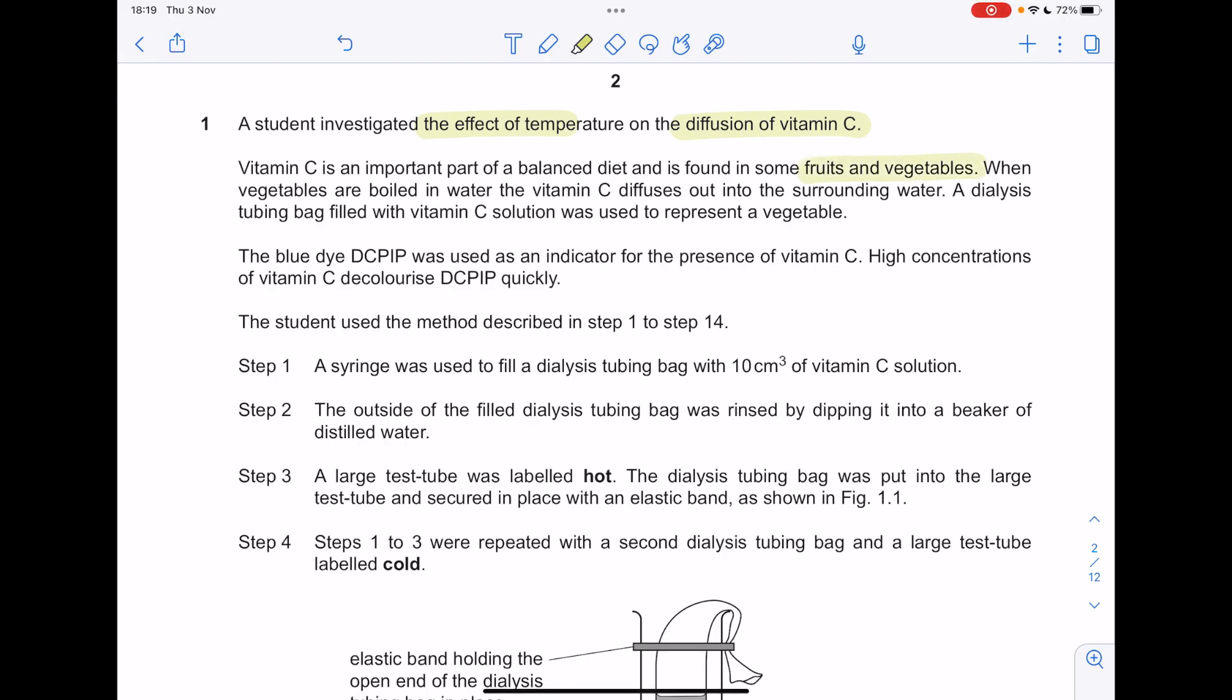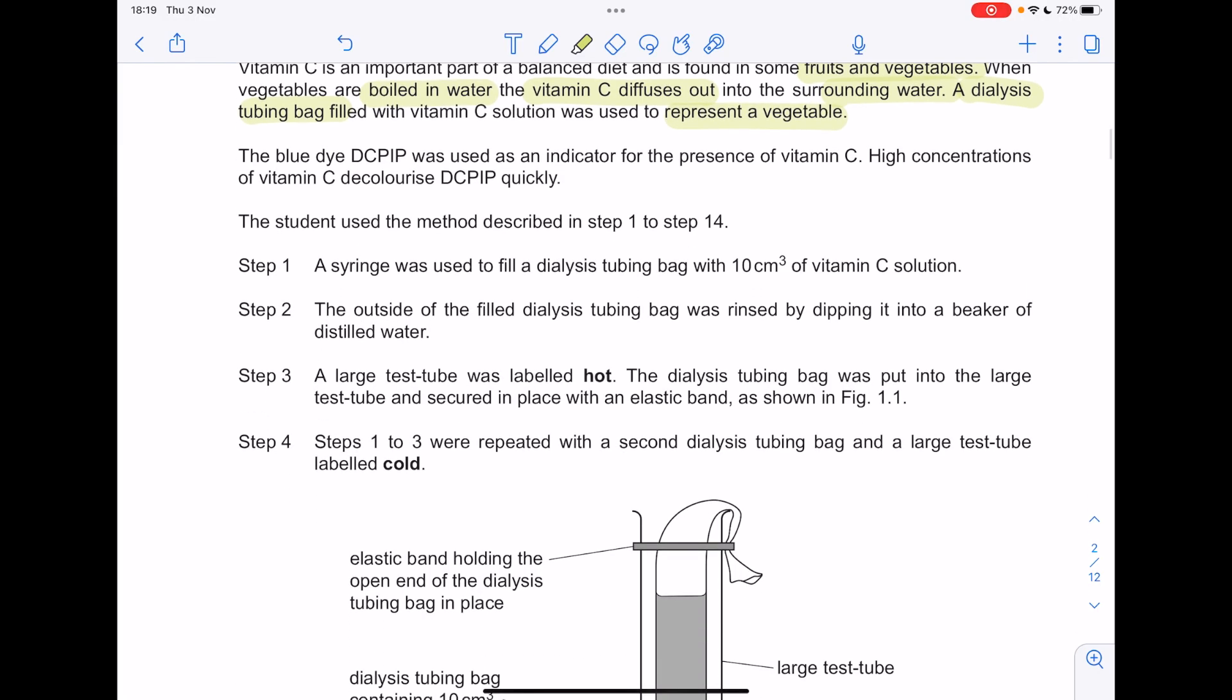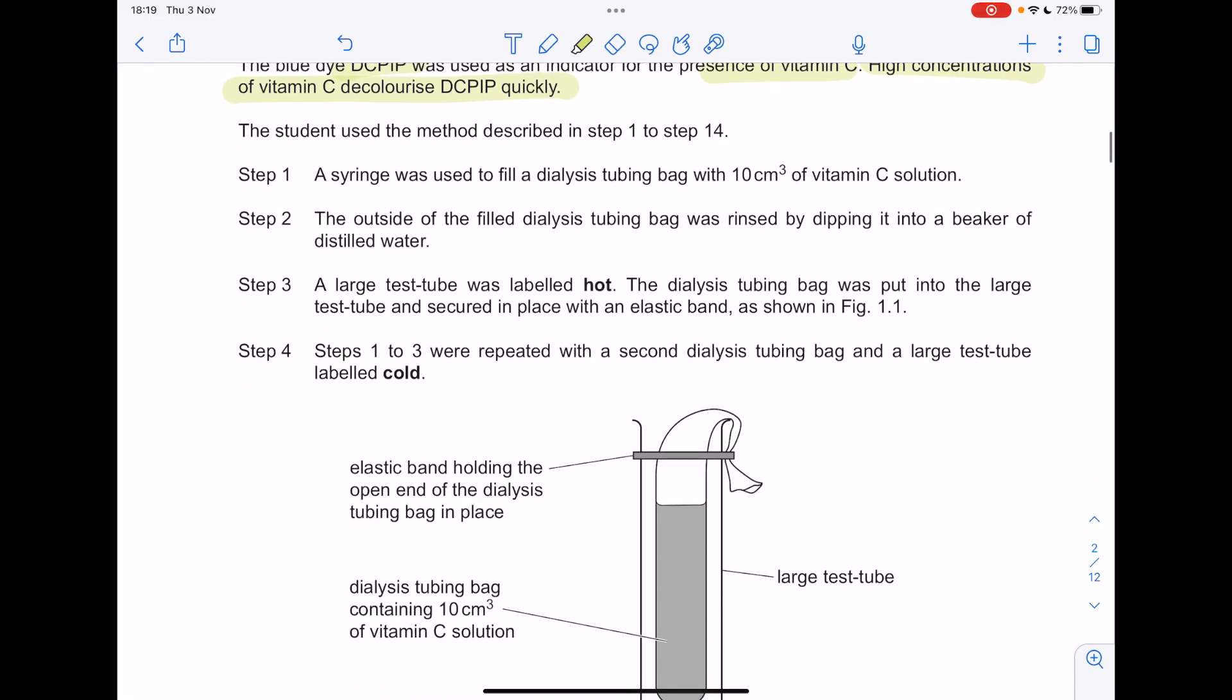When vegetables are boiled in water, the vitamin C diffuses out into the surrounding water. A dialysis tubing bag filled with vitamin C solution was used to represent a vegetable. The blue dye DCPIP was used as an indicator for the presence of vitamin C. High concentrations of vitamin C decolorized DCPIP. The student uses the method described in steps 1 to 14.